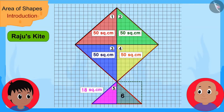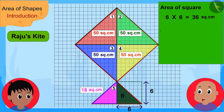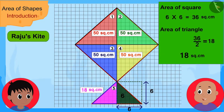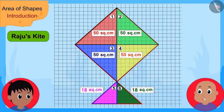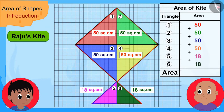This second small triangle, just like the first small triangle, is half of this 36 square centimeter square. This means that the area of this second small triangle is also 18 square centimeters. Now finally, we just have to add the area of all these triangles and we will know the area of your kite. In this way, the area of your kite is 236 square centimeters, Bablu explained to Raju.